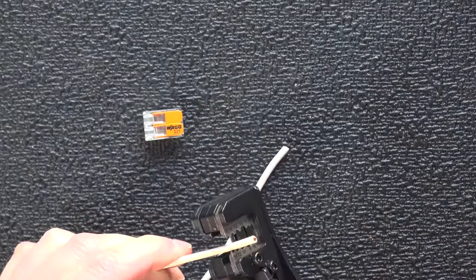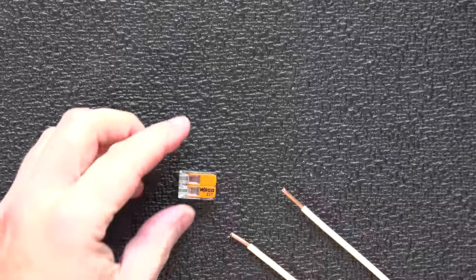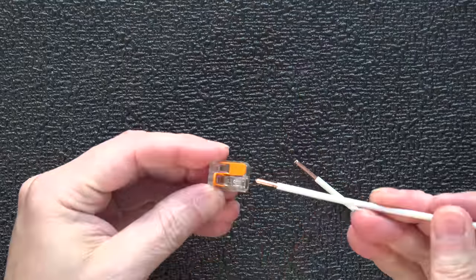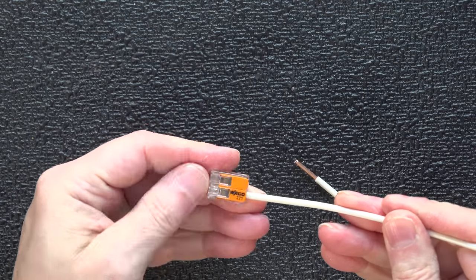Now they might not look like much until you actually try them out. Just cut and strip the length of wire you want, insert it into the connector with the lever flipped up, close it, and your electrical connection is completely done.